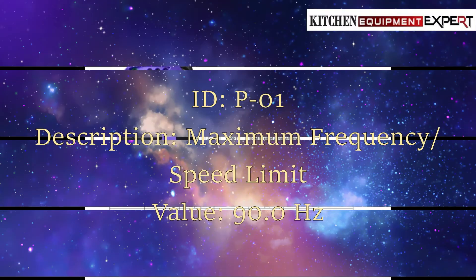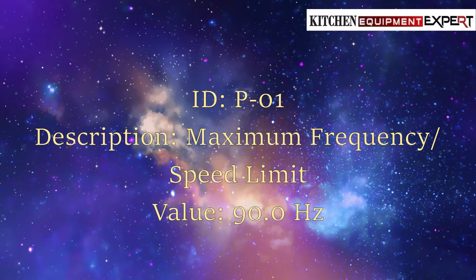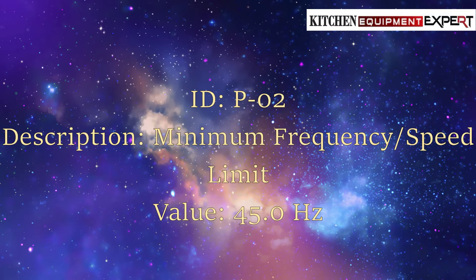ID Parameter P01. Description: Maximum Frequency/Speed Limit. Value: 90.0 Hz. ID Parameter P02. Description: Minimum Frequency/Speed Limit. Value: 45.0 Hz.